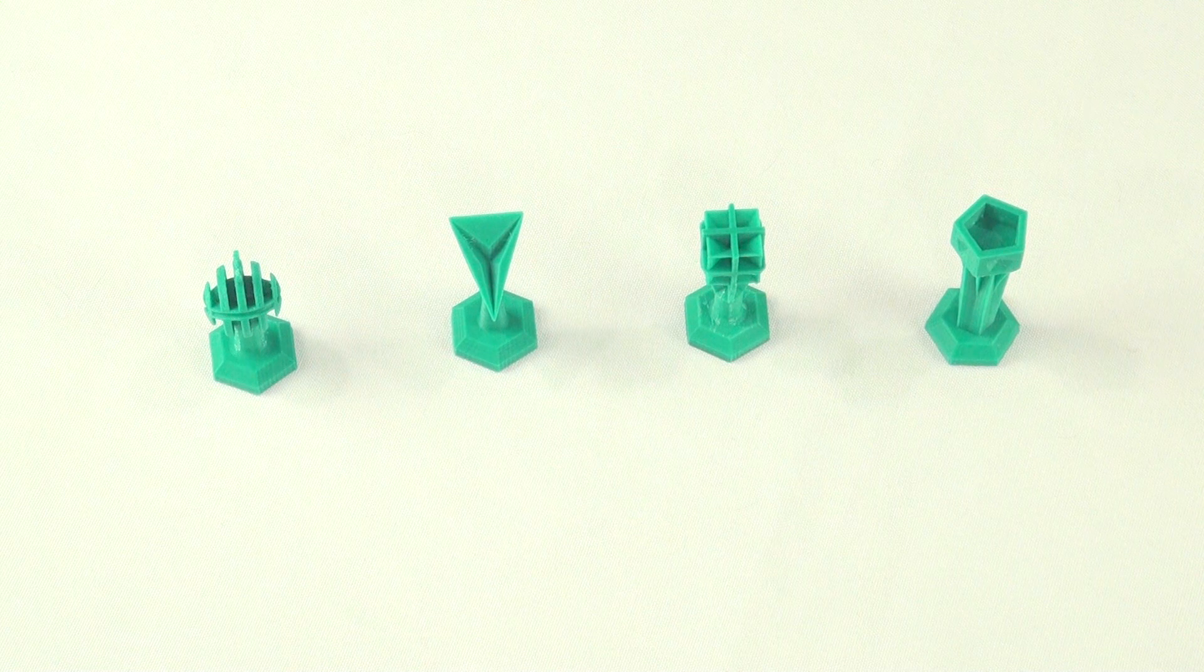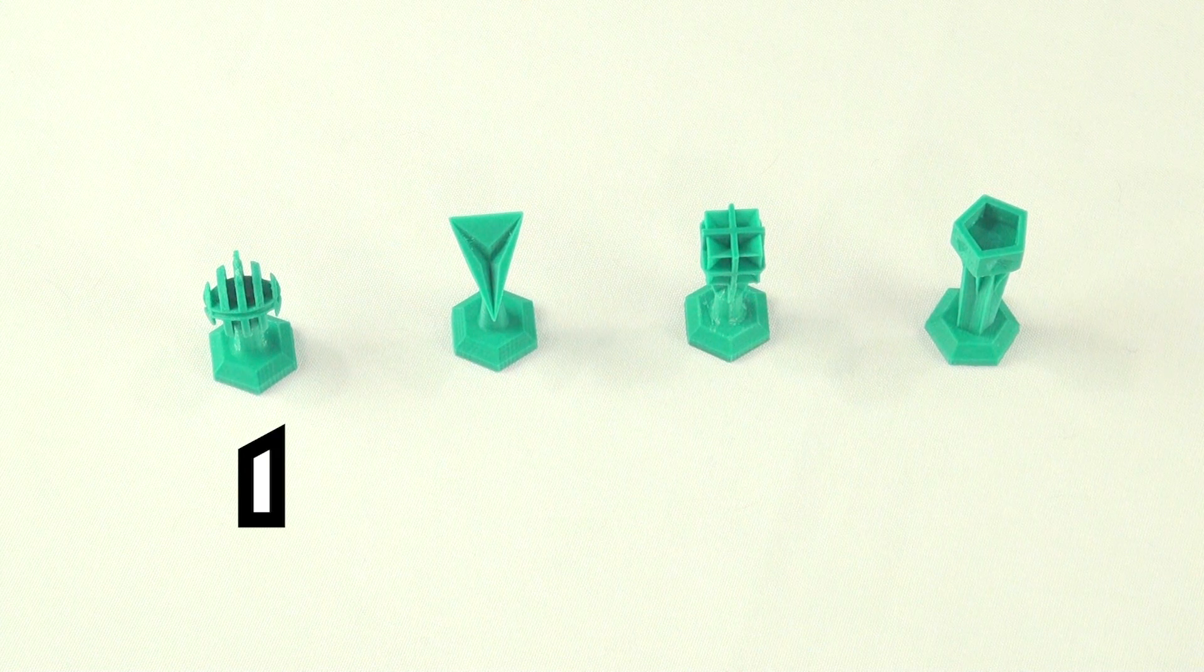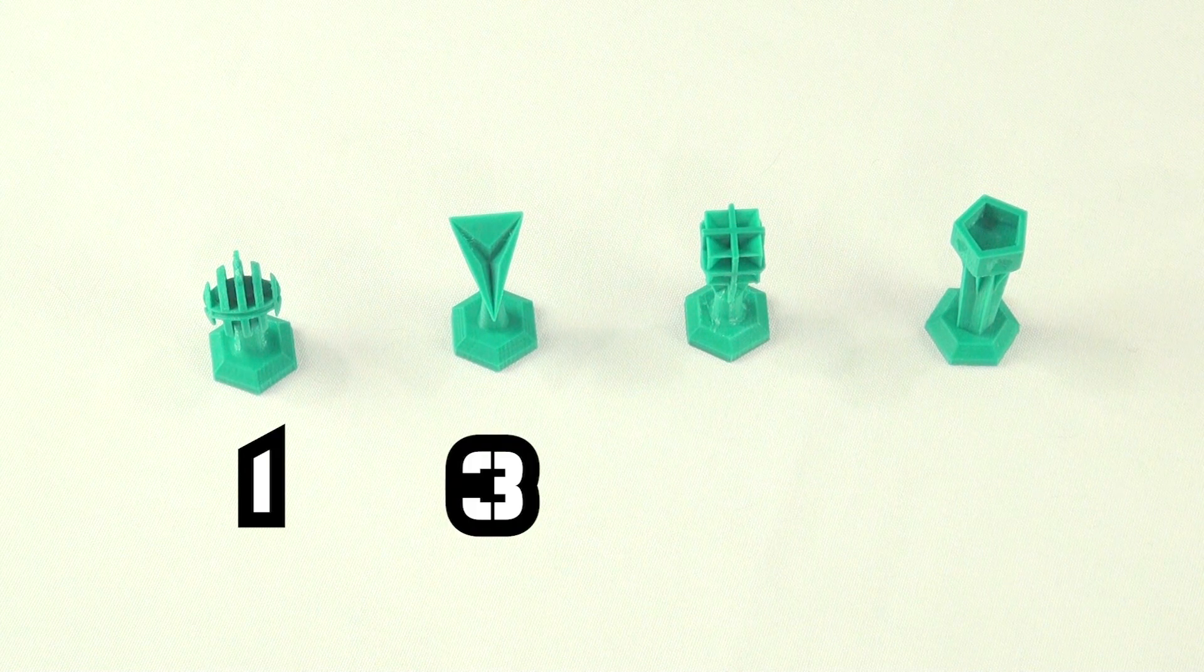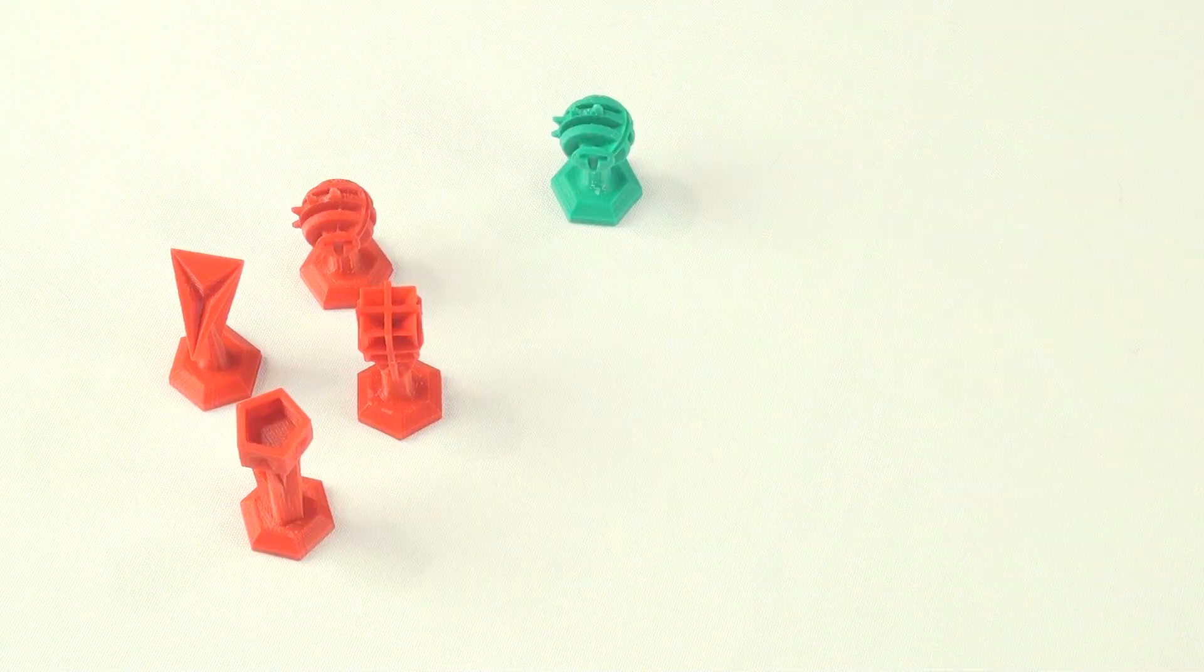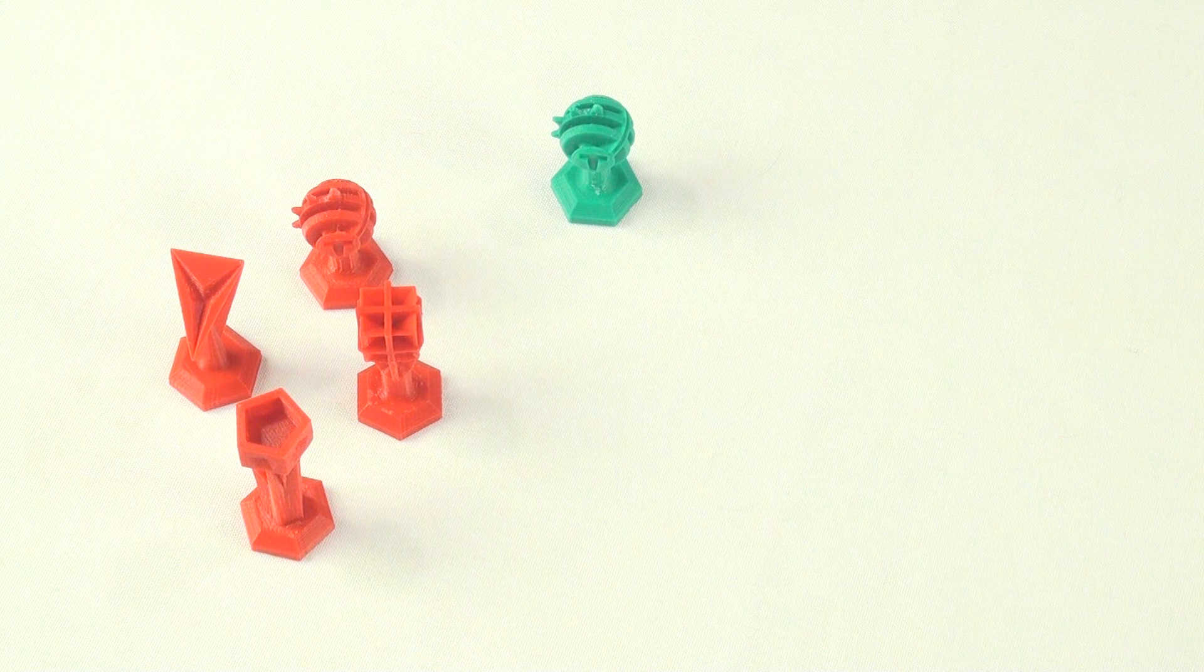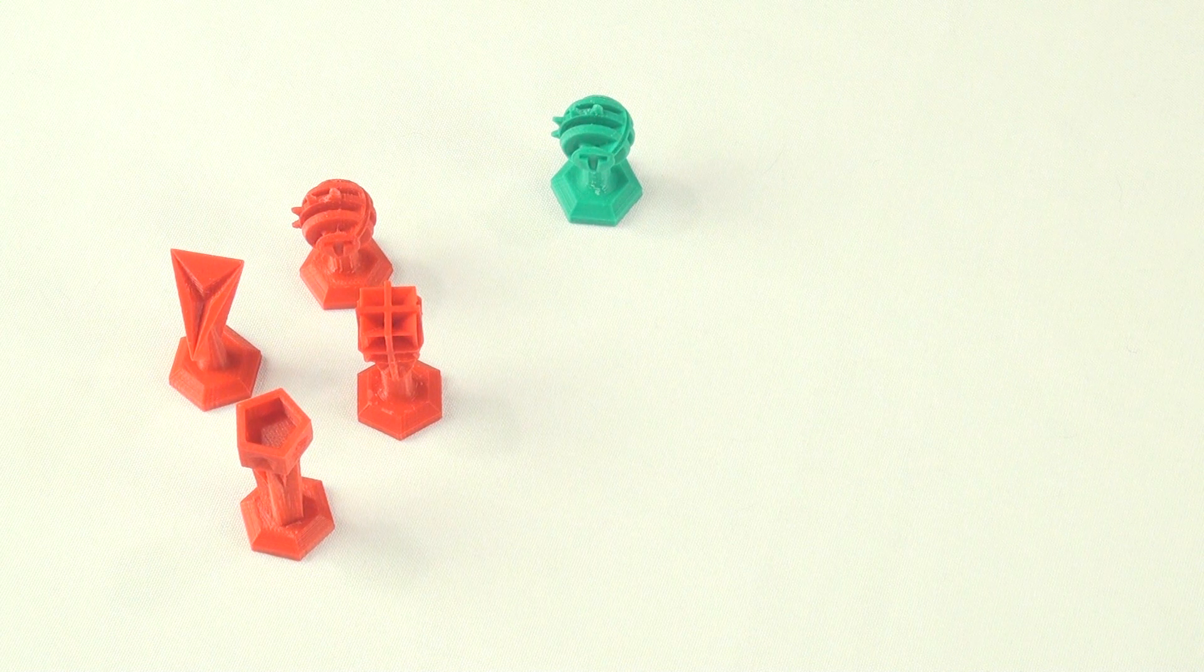And Pentagons move five. When it comes to capturing, it's kind of reversed. Circles will win any time they try to take another piece.